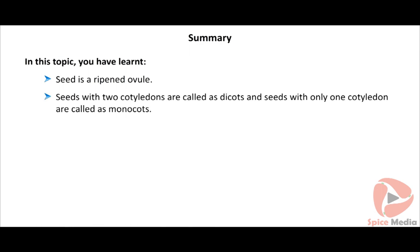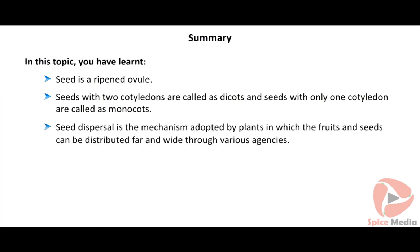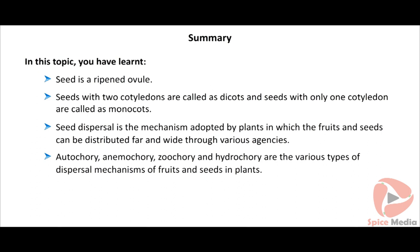In summary: a seed is a ripened ovule. Seeds with two cotyledons are called dicots and seeds with only one cotyledon are called monocots. Seed dispersal is the mechanism adopted by plants by which fruits and seeds can be distributed far and wide through various agencies. Autochory, anemochory, zoochory, and hydrochory are the various types of dispersal mechanisms of fruits and seeds in plants.